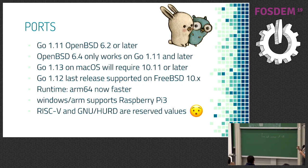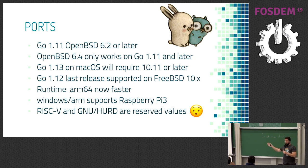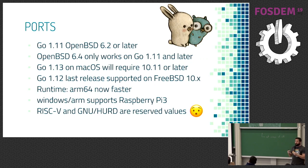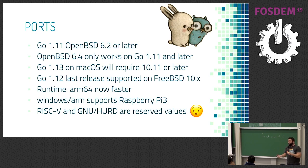New ports: Go 1.11 works on OpenBSD 6.2 or later. OpenBSD 6.4 requires Go 1.11 or later. Go 1.13 on macOS will require 10.11 or later — Go 1.12 didn't break anything but 1.13 will if you're on 10.10 or earlier. Go 1.12 is the last release supporting FreeBSD 10.x. Windows ARM now supports Raspberry Pi 3. RISC-V support is coming. GNU/Hurd has reserved values, meaning work may start in the future but hasn't yet.